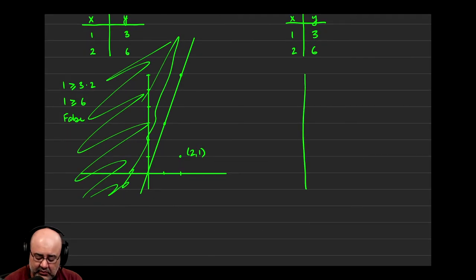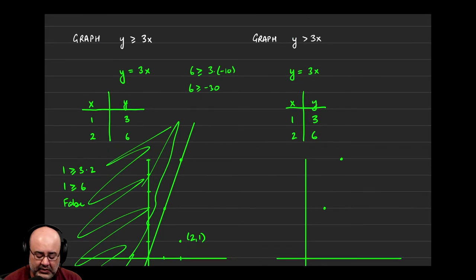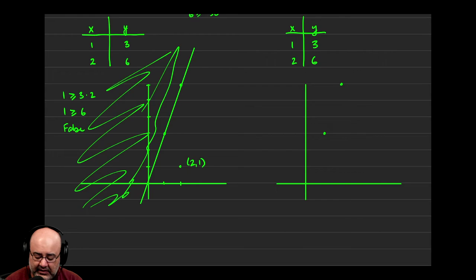Then we would do the same thing. We would draw an xy plane. The only difference here is going to be the way that I draw the line itself. So notice that here, I had a greater than or equal to, but for this example, I just have a greater than. That means that the line that I draw when I connect these two dots has to be dashed or dotted.